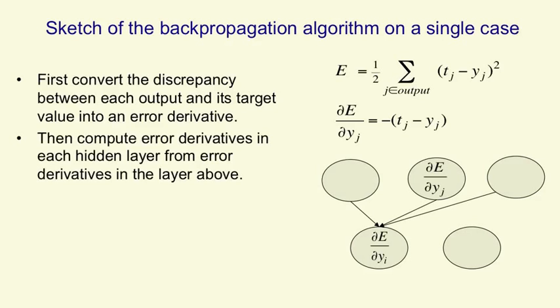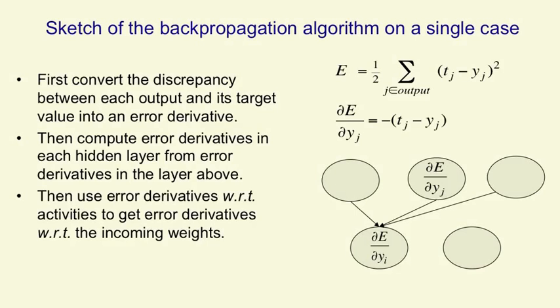Once we've got the error derivative with respect to the output of one of these output units, we then want to use all those error derivatives in the output layer to compute the same quantity in the hidden layer that comes before the output layer. The core of backpropagation is taking error derivatives in one layer and from them computing the error derivatives in the layer that comes before. We want to compute DE/DYI. When we change the output of unit I, it changes the activities of all the output units, so we have to sum up all those effects. The algorithm takes error derivatives already computed for the top layer and combines them using the same weights as in the forward pass to get error derivatives in the layer below.